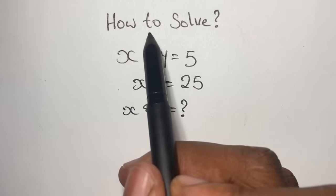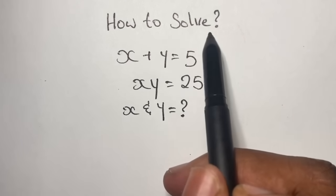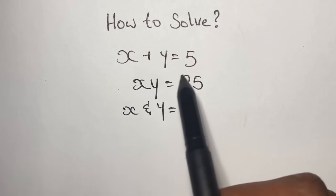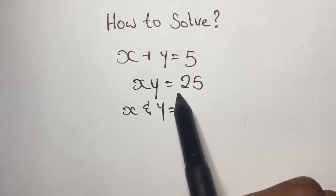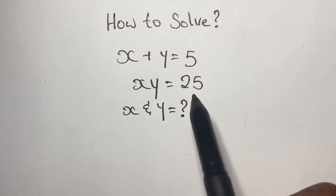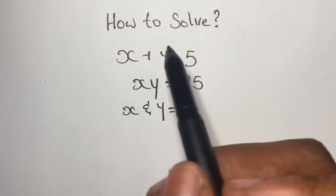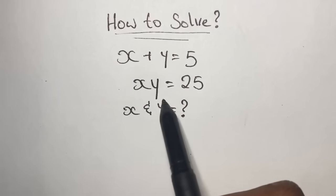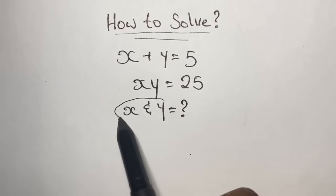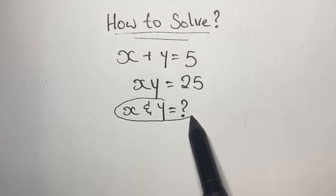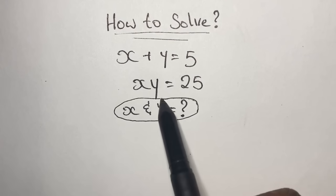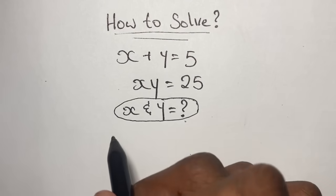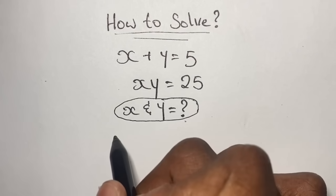Greetings again everyone, welcome back to my channel. Here we have another mathematical equation that we're going to solve. In this case we have a pure simultaneous equation where one equation says x plus y is equal to 5, and the other says x times y equals 25. We are to find the values of x and y.